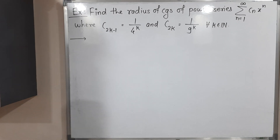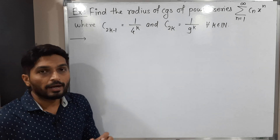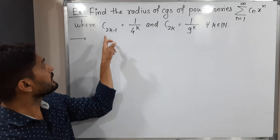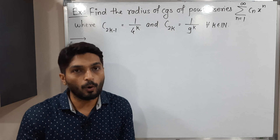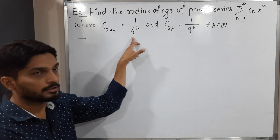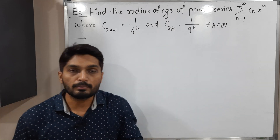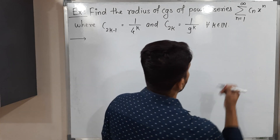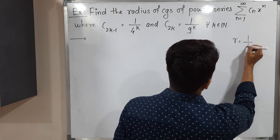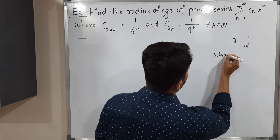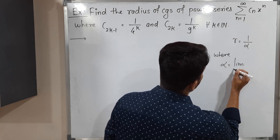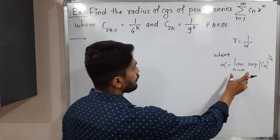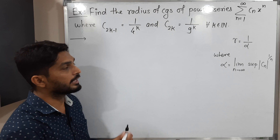In this video we are going to discuss an example where we have to find the radius of convergence of a power series. The coefficient c_n is defined in two different ways: when the suffix is odd (2k-1) and when it is even (2k). We have the formula: radius of convergence R = 1/α, where α = lim_{n→∞} sup |c_n|^{1/n}. I will calculate α first, then find the radius of convergence.